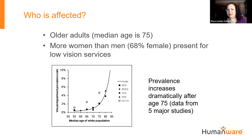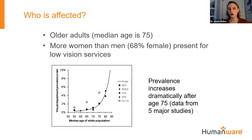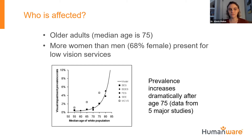Regarding AREDS supplements: the studies on AREDS only looked at people who already had macular degeneration. That particular vitamin helps prevent progression to the severe stage or conversion to the wet form. The studies have not shown that it prevents developing the disease. For those with a family history, a healthy high-antioxidant diet, not smoking, and routine eye exams are encouraged to catch early-stage disease where vitamins would then be of benefit.